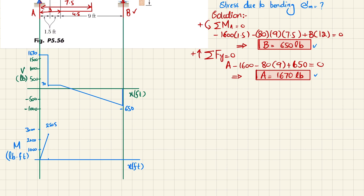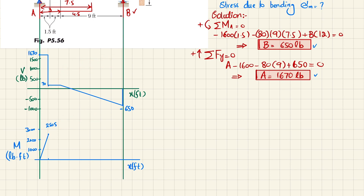The second area under the shear force diagram is 70 multiplied by 1.5 feet, giving 105 pound-feet. Adding this to 2505 gives 2505 plus 105 equals 2610 pound-feet. So the bending moment rises from 2505 to 2610 at the end of this segment. The bending moment diagram continues linearly upward to this point.